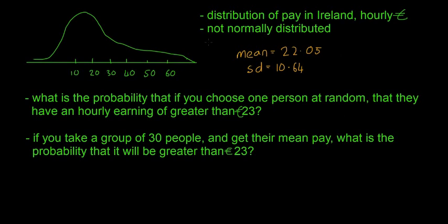The distribution of pay in Ireland, hourly, is not normally distributed. It has a mean of 22.05 euro and a standard deviation of 10.64 euro. First question: what is the probability that if you choose one person at random, they have an hourly earning greater than 23 euro?